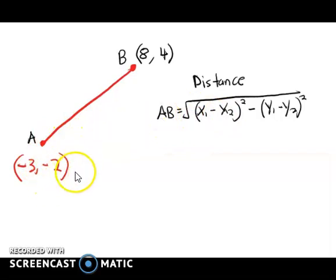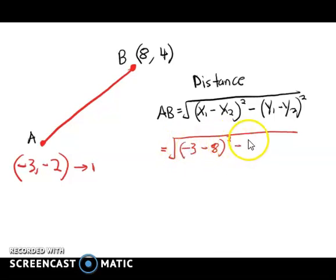Now we choose this as the first one. So we're going to calculate: x1 we choose from here, this is -3, then we minus with 8, which is the second one. Then we square it. Then y1, we have to choose from here - do not mix up.